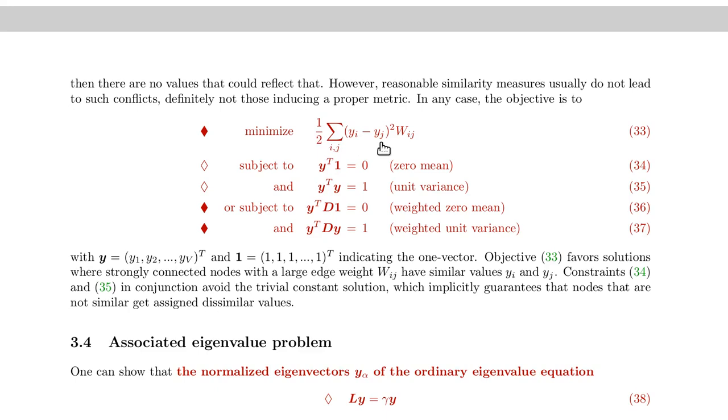We want to avoid that by requiring zero mean and unit variance. Now, zero mean is formalized here by multiplying the vector that we use to represent the values on the nodes by y, and we multiply this with a one vector. And that essentially means we take the sum of all the components of y and that should be zero.